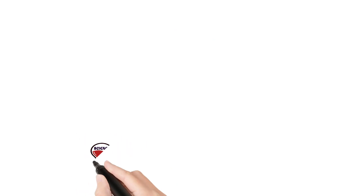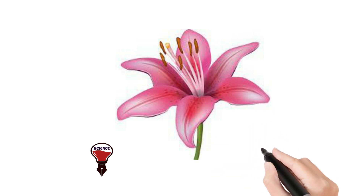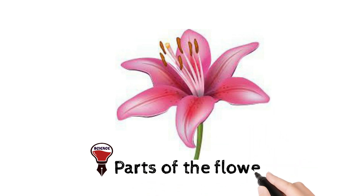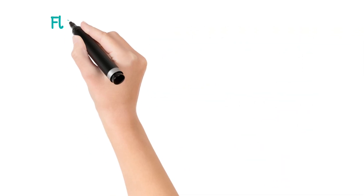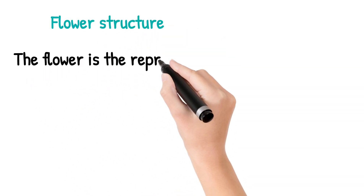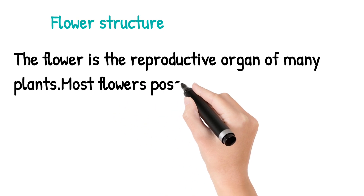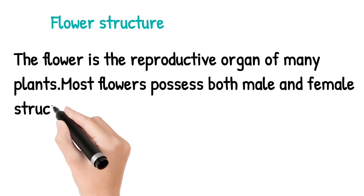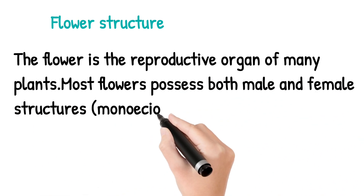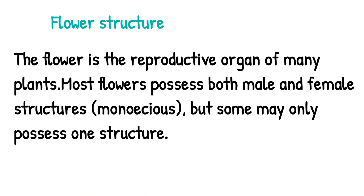Hello, hi, welcome to our science lesson. Today in our science lesson we are going to see about the parts of the flower. Let's start with some introduction to flower structure. The flower is the reproductive organ of many plants. Most flowers possess both male and female structures, but some may only possess one structure.